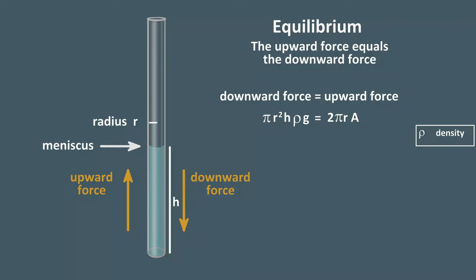as the tube gets bigger, the downward force increases with the square of r, whereas the upward force increases as r to the first power.